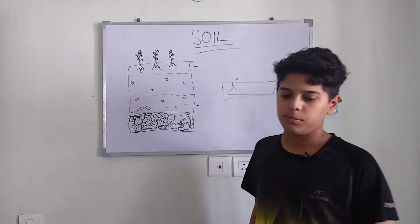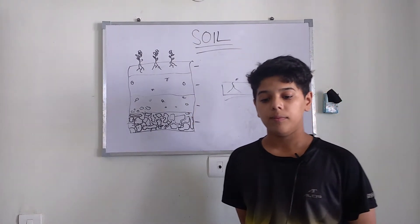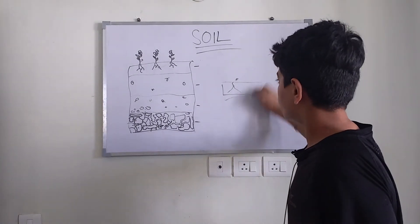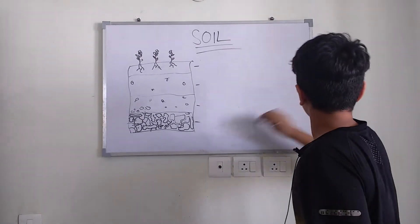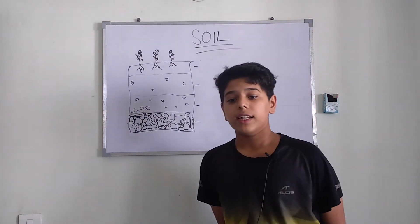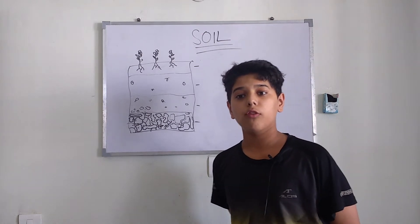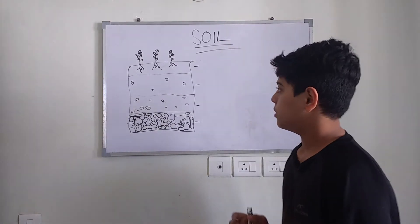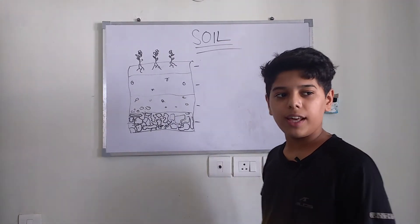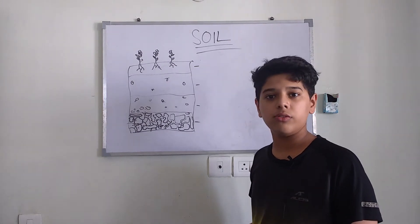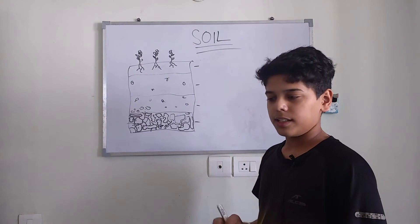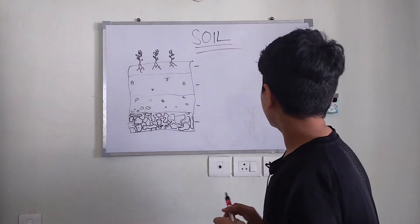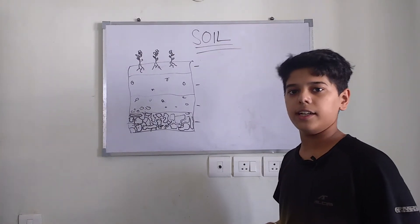Now we will see how soil is formed. Soil is formed by a process known as weathering. Weathering is the process of breaking down big rocks into small particles, which are known as soil. Breaking down of big rocks takes a very long time — about thousands of years. So weathering cannot be done artificially; it is a natural process and soil takes thousands of years to form.